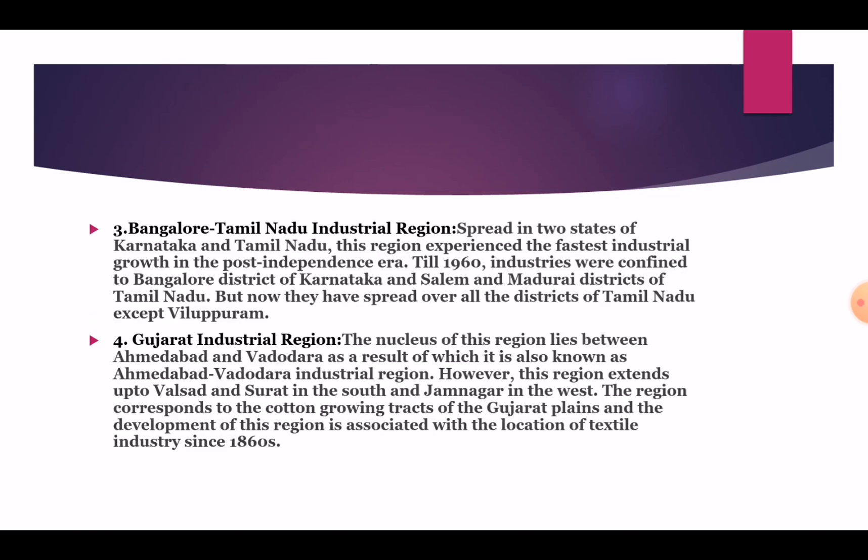Bangalore-Tamil Nadu Industrial Region: Spread across two states of Karnataka and Tamil Nadu, this region experienced fast industrial growth in the post-independence era till 1960. Industries were confined to Bangalore District of Karnataka and Salem and Madurai Districts of Tamil Nadu, but now they have spread all over the districts of Tamil Nadu except Villupuram.